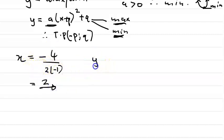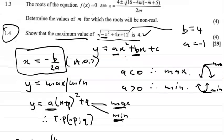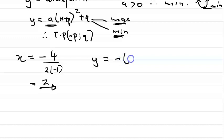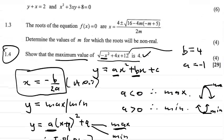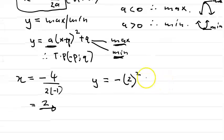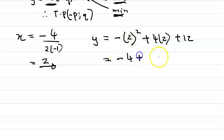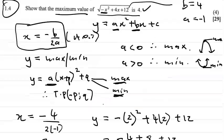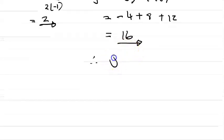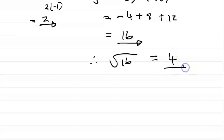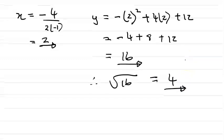Now let's substitute x equals 2 back into the original equation: y equals minus x squared plus 4x plus 12, so that's minus 2 squared plus 4 times 2 plus 12. Two squared is 4, so we have minus 4 plus 8 plus 12, which equals 16. Therefore we take the square root of 16, which equals 4. That's your answer using the formula method.